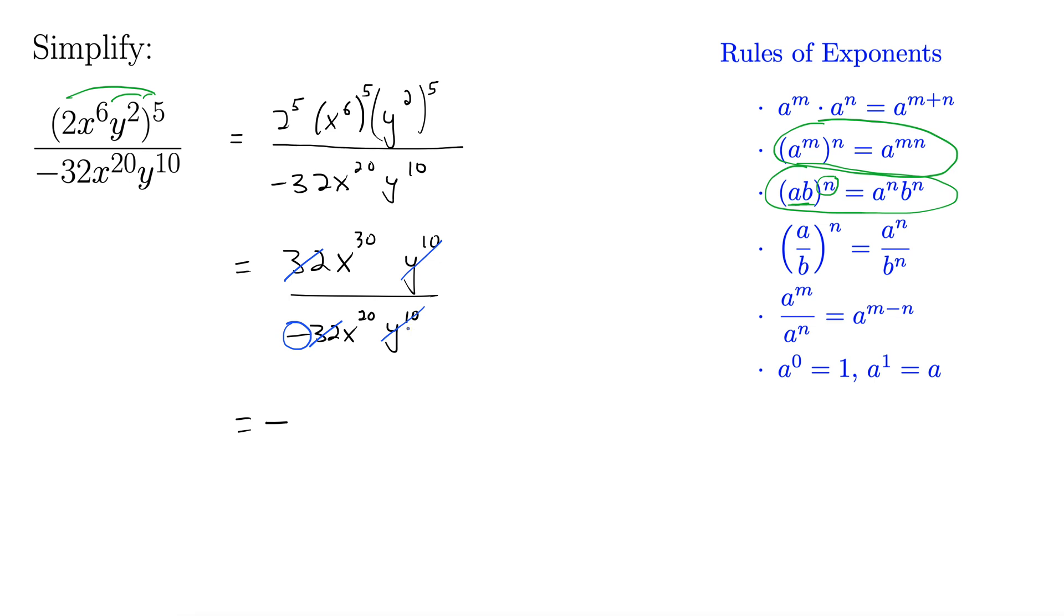When you have y to the 10th on the top and the bottom, you can cancel them straight out like that. You could also look at it another way. You could use the properties of exponents here. Y to the 10 minus 10 is another way to look at it, which is y to the 0, but anything to the 0 here is 1. So any way you slice that, those are going away.